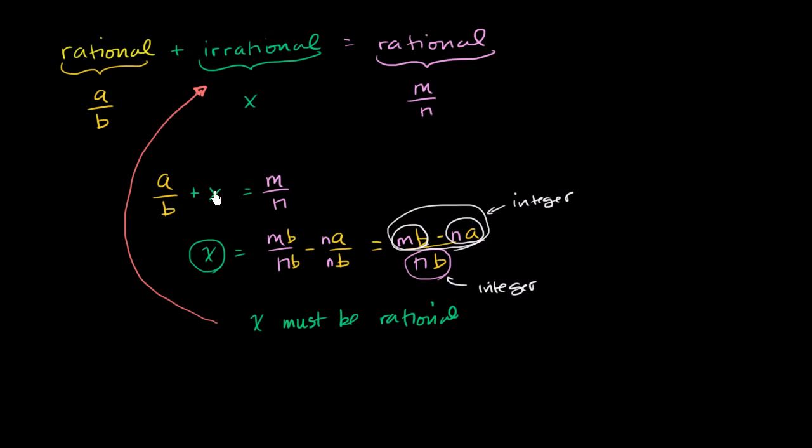The assumption was that x is irrational. Now we got that x must be rational. So therefore, this cannot be the case. A rational plus an irrational must be irrational. Let me write that down: rational plus irrational must be irrational.